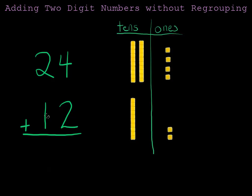12 has one ten and two ones. So here's my ten and here's my two ones. Notice that all of my ones are in the ones column, and all of my tens are in the tens column.